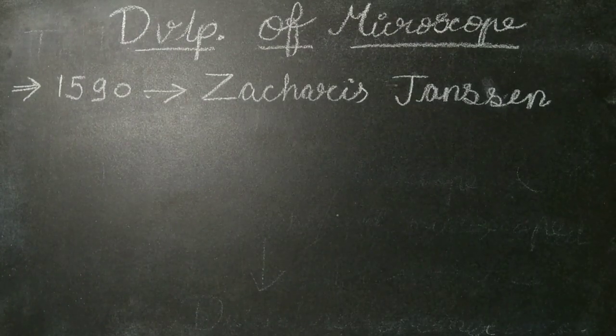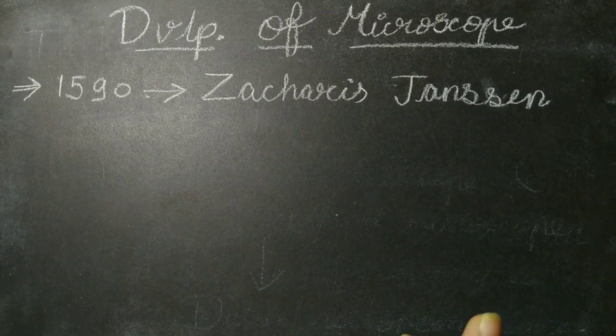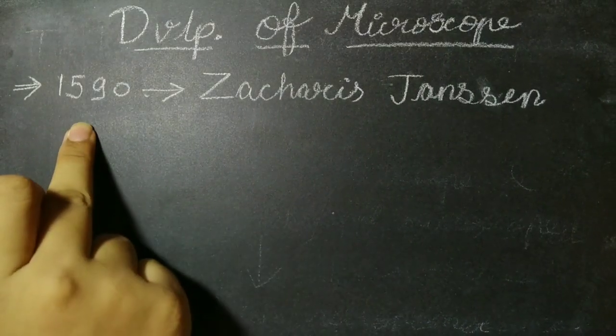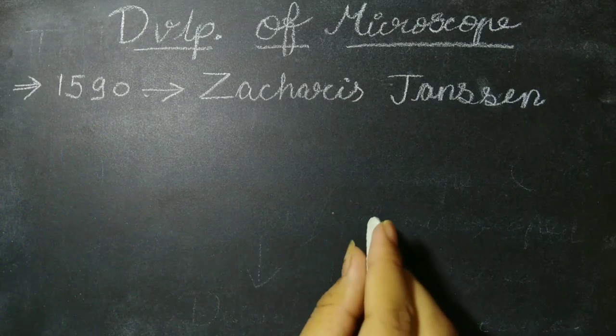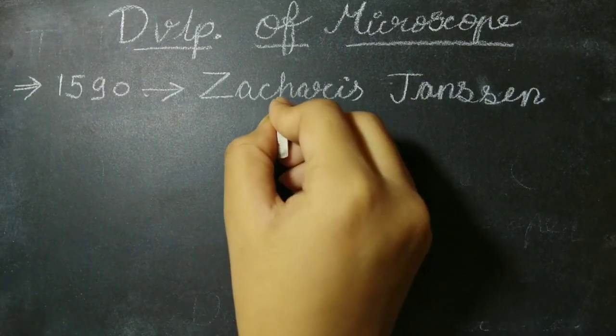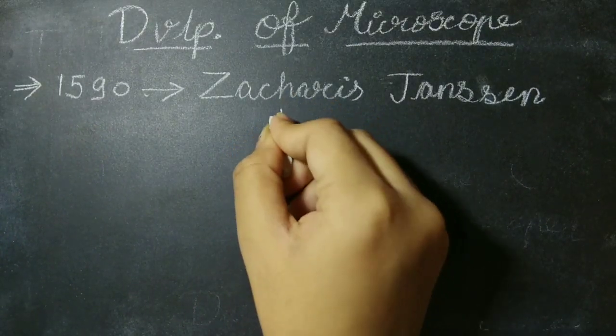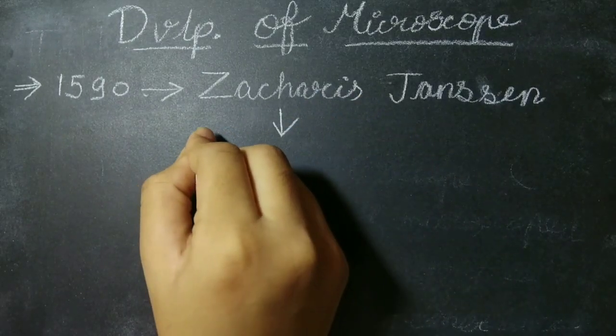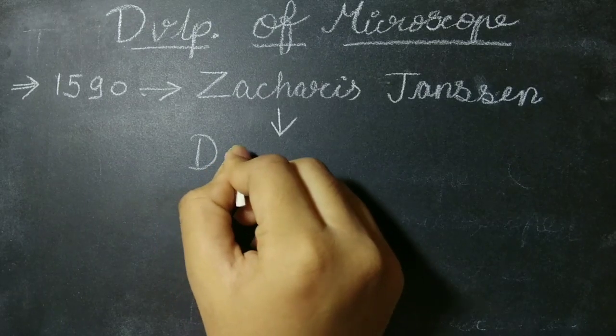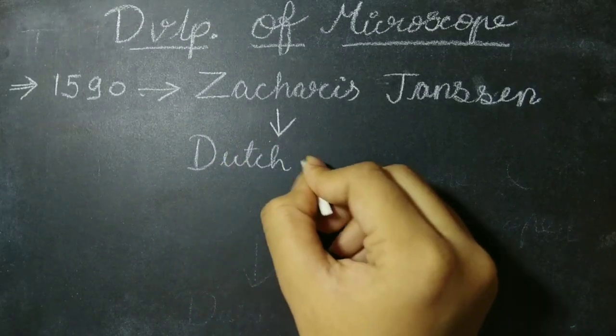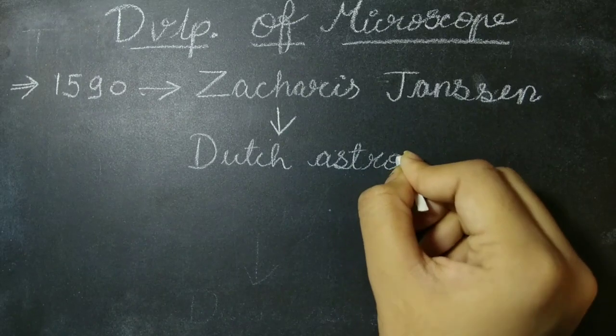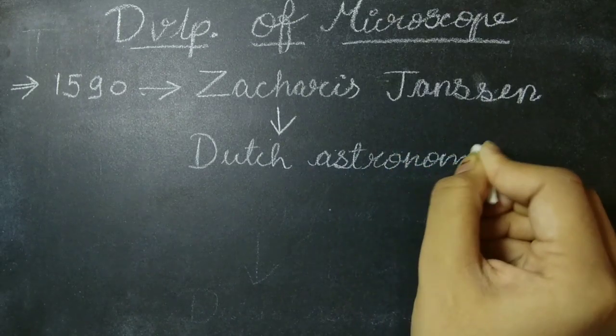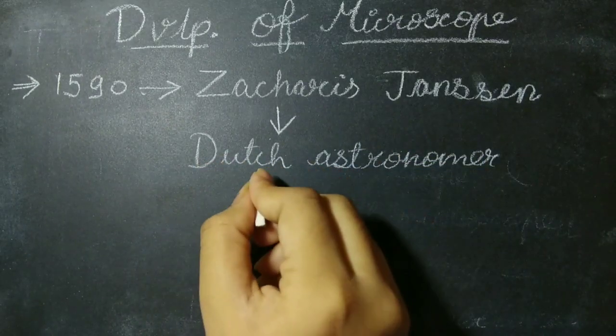Now let us discuss about the development of microscope. In 1590, Zacharias Janssen, he developed a first model of the compound microscope and a telescope. Also, he was a Dutch astronomer.